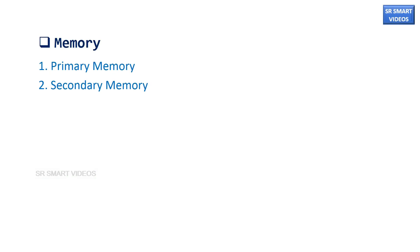Memory is a crucial part of the computer system. It is used to store data before and after processing. Generally, memory is divided into two types: primary memory and secondary memory.